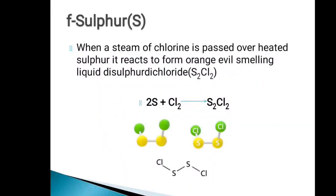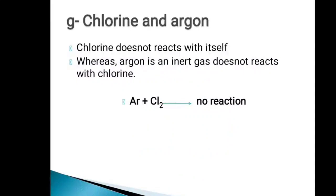When steam of chlorine is passed over heated sulfur, it reacts to form an evil-smelling orange liquid called disulfur dichloride (S2Cl2). In its structure, two sulfur atoms are attached by a covalent bond with each sulfur having one chloride attached, and the chloride groups point in different directions. The last elements are chlorine and argon — chlorine does not react with itself, and argon due to its inert nature does not react with water, oxygen, or chlorine at all.